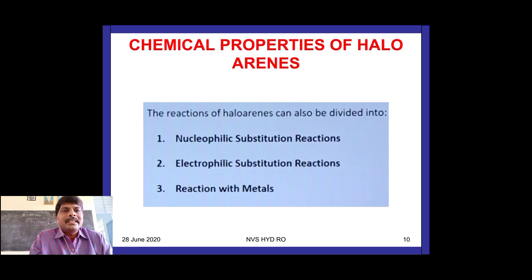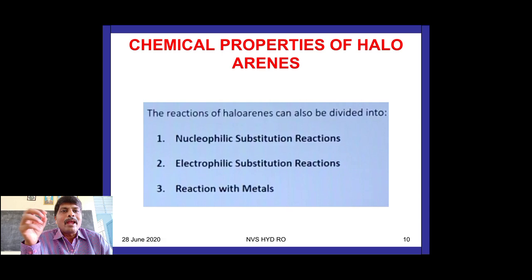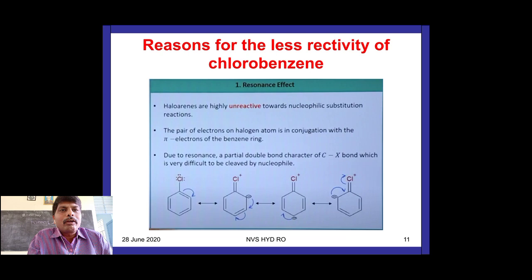Now we look at the chemical properties of halo arenes. Halo arenes undergo three types of chemical reactions: nucleophilic substitution, electrophilic substitution, and reaction with metals. In alkyl halides the characteristic reactions are nucleophilic substitution (SN1 and SN2). But in the case of halo arenes, nucleophilic substitution reactions are less favored — the reactivity of halo arenes towards nucleophilic substitution is less.